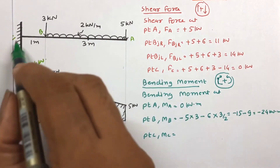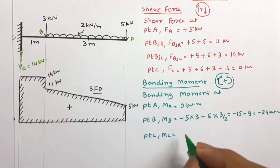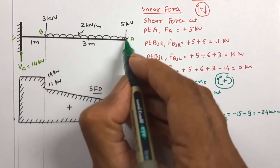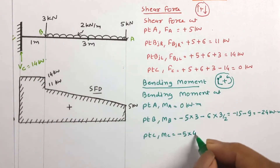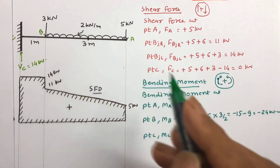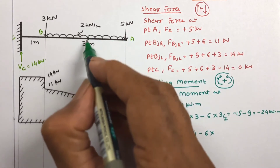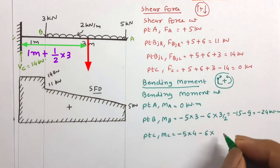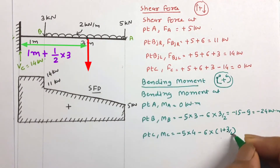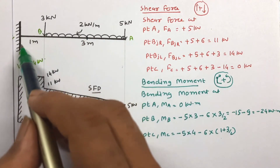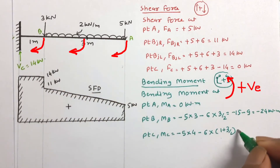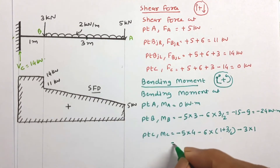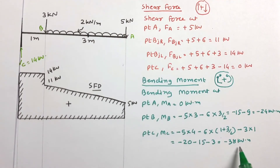Now let us work out bending moment at point C. The 5 kN force is clockwise (minus) with distance 3+1 = 4, giving minus 5×4. The UDL force of 6 kN has centroid distance 1 + 3/2 from C, giving minus 6×(1 + 3/2). The 3 kN point load is also clockwise (minus) with distance 1, giving minus 3×1. On simplifying, the bending moment at C is minus 38 kN·m.